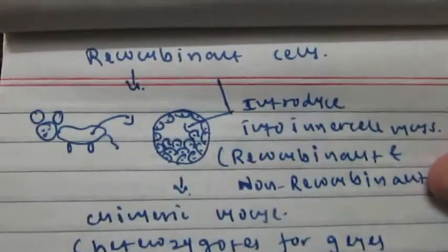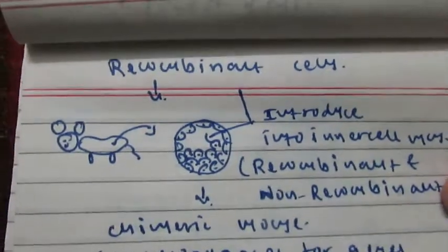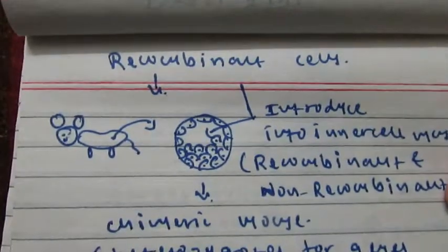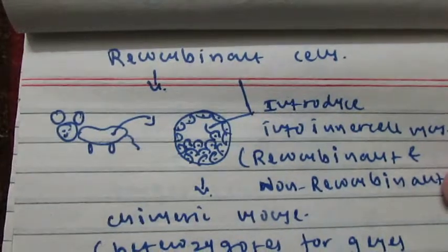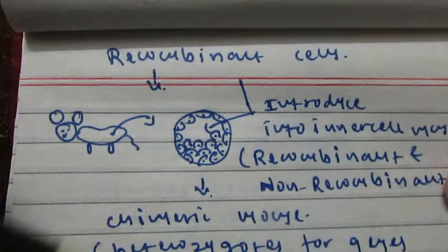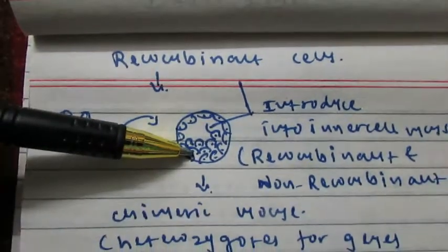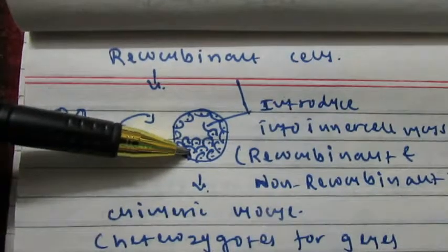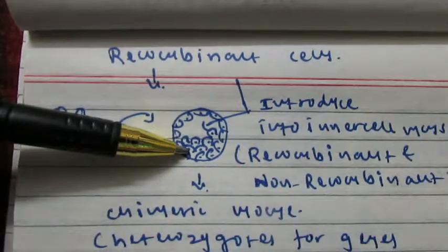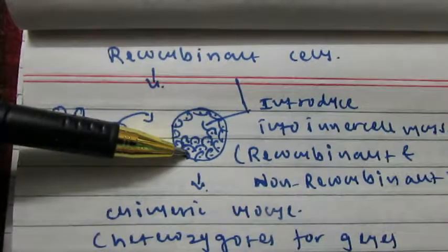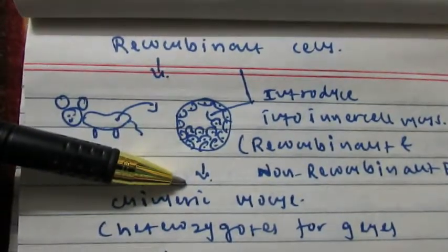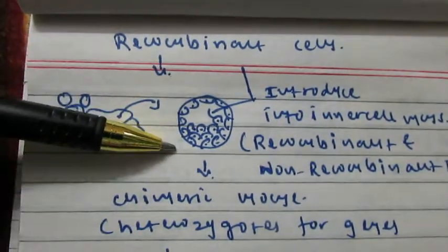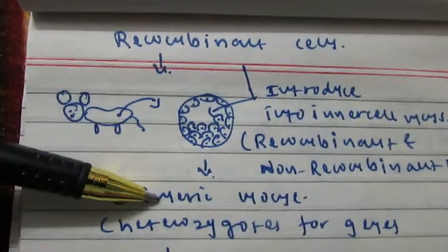These recombinant cells are again introduced into the blastocyst stage of another mouse. So the inner cell mass may again contain both recombinant and non-recombinant embryonic stem cells. It is a mixture of both, and the progeny produced from this blastocyst will be chimeric.